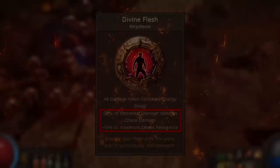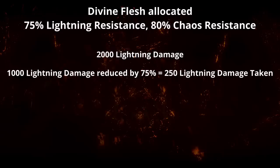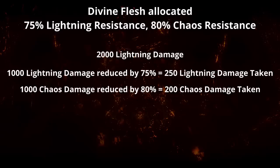Your effective resistance for elemental damage will be the mean value between the specific elemental resistance and your chaos resistance. For example, a character using Divine Flesh with 75% lightning resistance and 80% chaos resistance takes a hit of 2000 lightning damage. 1000 is taken as lightning damage, mitigated by 75%, so 250 lightning damage is taken. The other 1000 is taken as chaos damage, mitigated by 80%, so 200 chaos damage is taken — for a total of 450 damage taken.